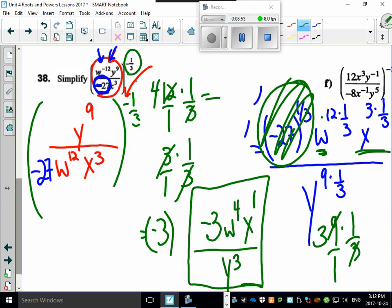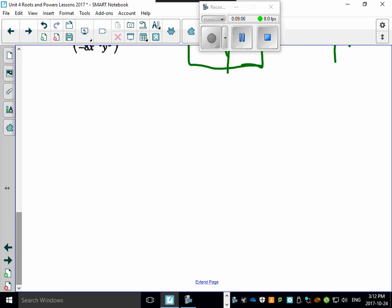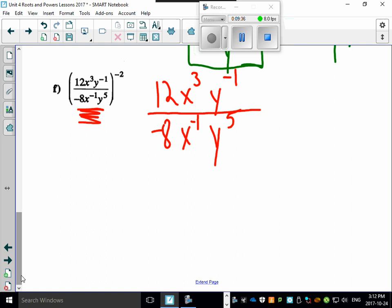Now take a look at the next one, which is F. I'm going to give myself a little bit more extended room here. This one's the worst one. Look at all the negatives that you have here and all the numbers you have to play with. But if you follow my lead, always do what's in the brackets first. This becomes really easy. There's 12, there's X cubed, there's Y minus 1. And there's minus 8, there's X to the minus 1, there's Y to the 5. Break that up into really pretty groups.